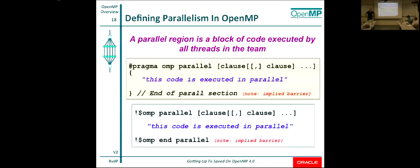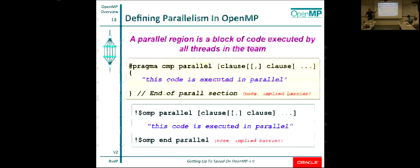A parallel region always ends with a barrier — a point in your code where all threads wait until the last one has arrived. That can have an impact on performance, but there's always an implied barrier at the end of a parallel region, and that's a good reason for doing so.